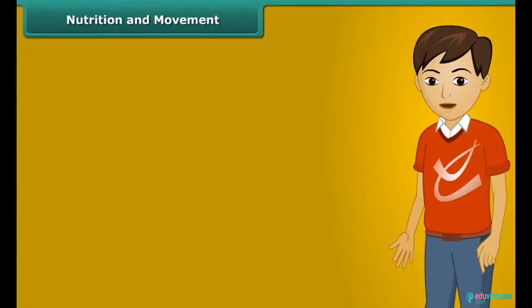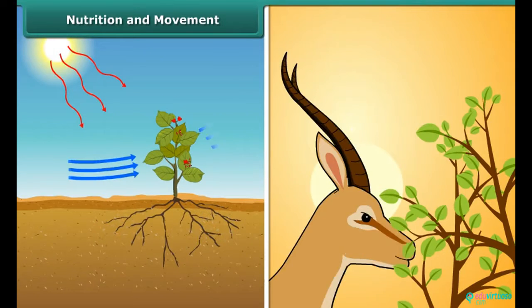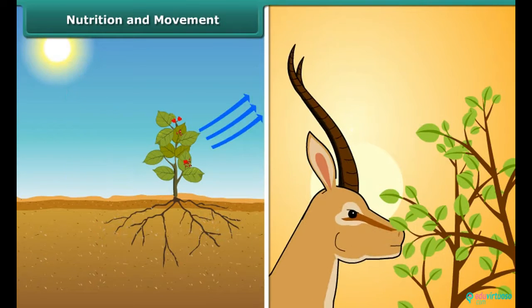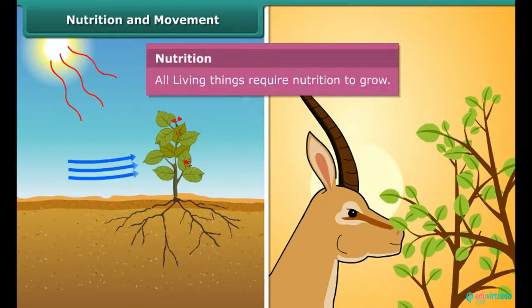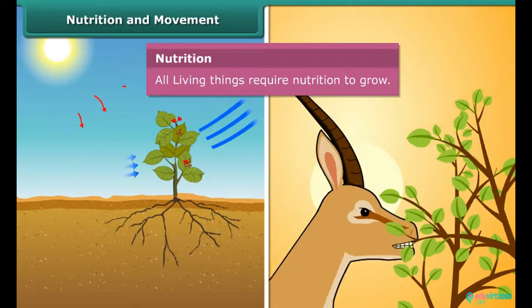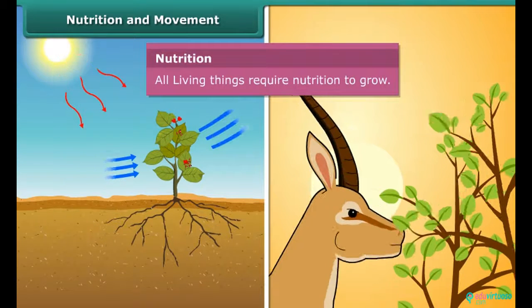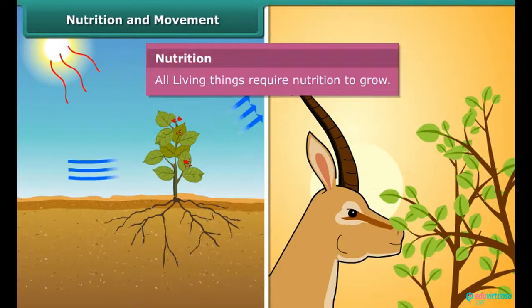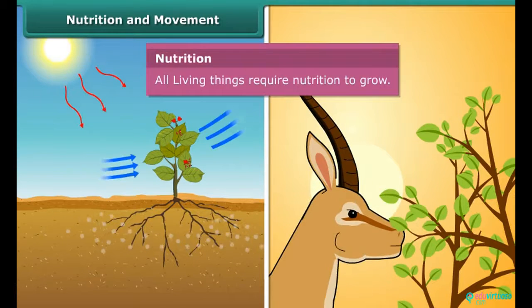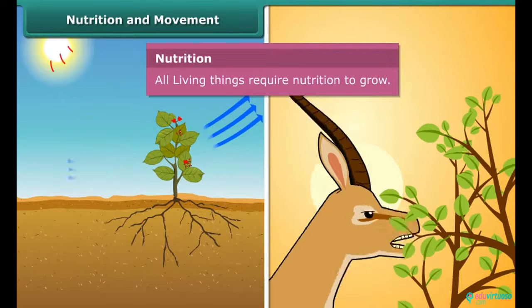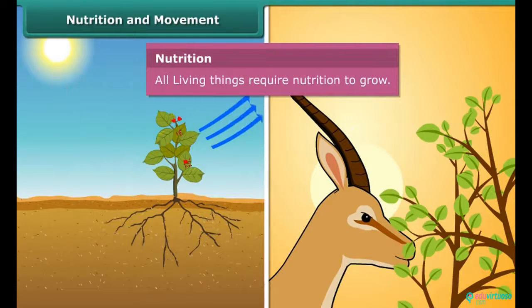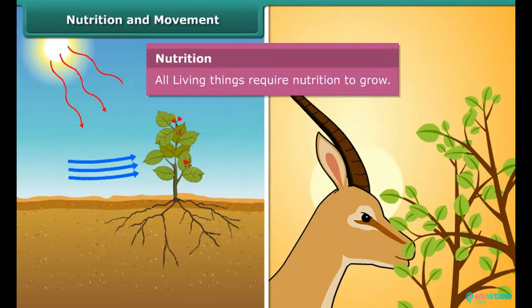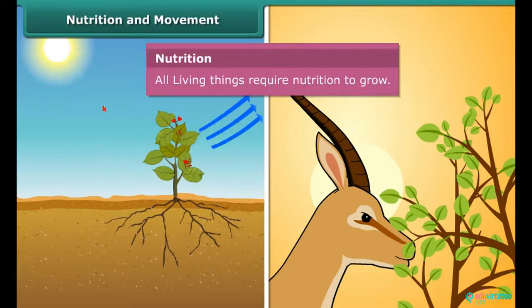Another important characteristic of living things is nutrition. All plants and animals require food to grow and survive. Plants prepare their own food by the process of photosynthesis in the presence of sunlight, whereas animals depend on plants for their food.